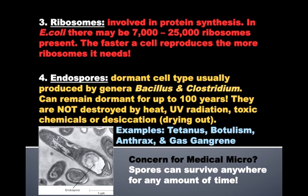The ribosomes are involved in protein synthesis. The ribosomes can be quite numerous — in certain E. coli strains, anywhere from 7,000 to 25,000 ribosomes may be present. The faster a cell reproduces, the more ribosomes it actually needs. Those that reproduce in about 20 minutes are amazingly fast in terms of their protein synthesis and have the higher end of the ribosome number.